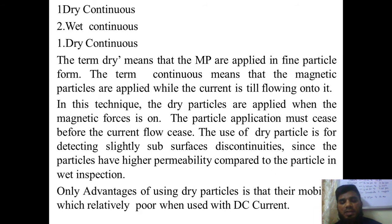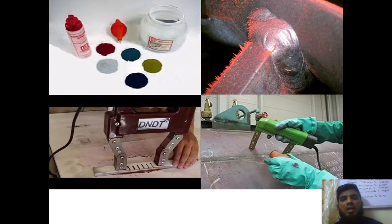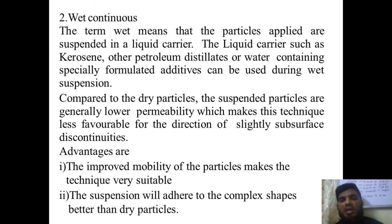The advantage of dry particles is that they can be easily removed from the surface by blowing off using blowers. Next is wet continuous inspection. The term 'wet continuous' means the particles are suspended in a liquid carrier such as kerosene, petroleum, or distilled water. Containing specially formulated additives, this can be used during wet inspection. Compared to dry inspection, the particles suspended are generally low formable, which makes this technique less favorable for detection of slightly sub-surface discontinuities. It can be used only for surface inspection.